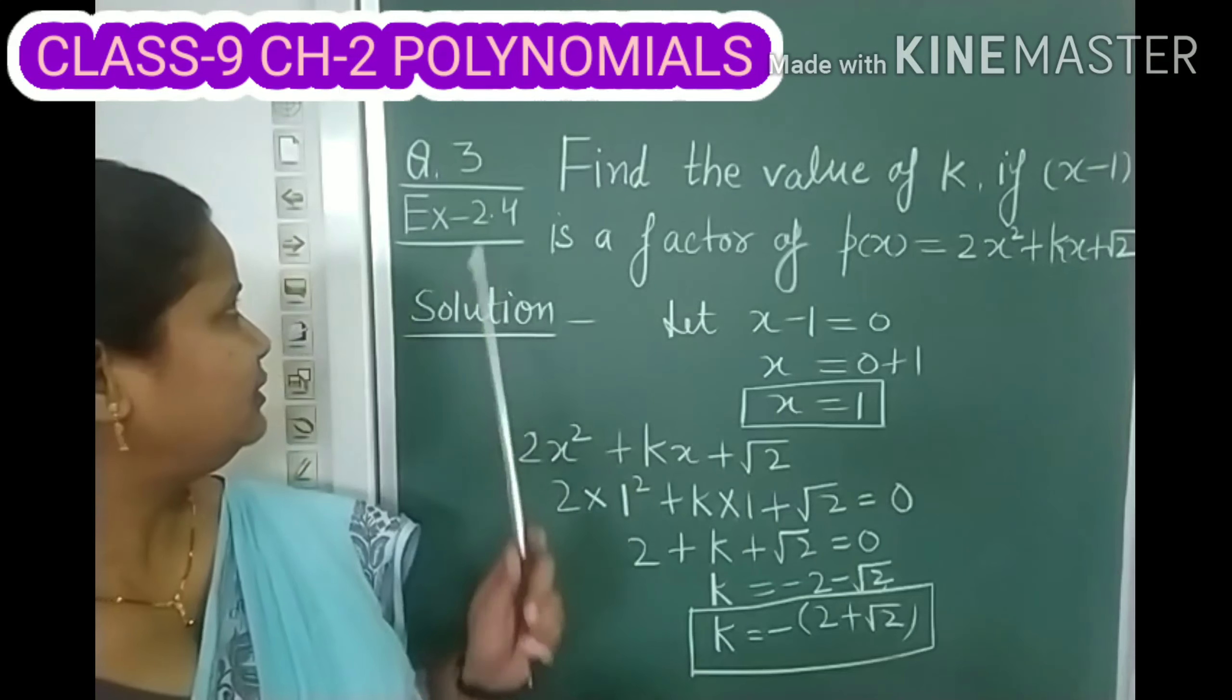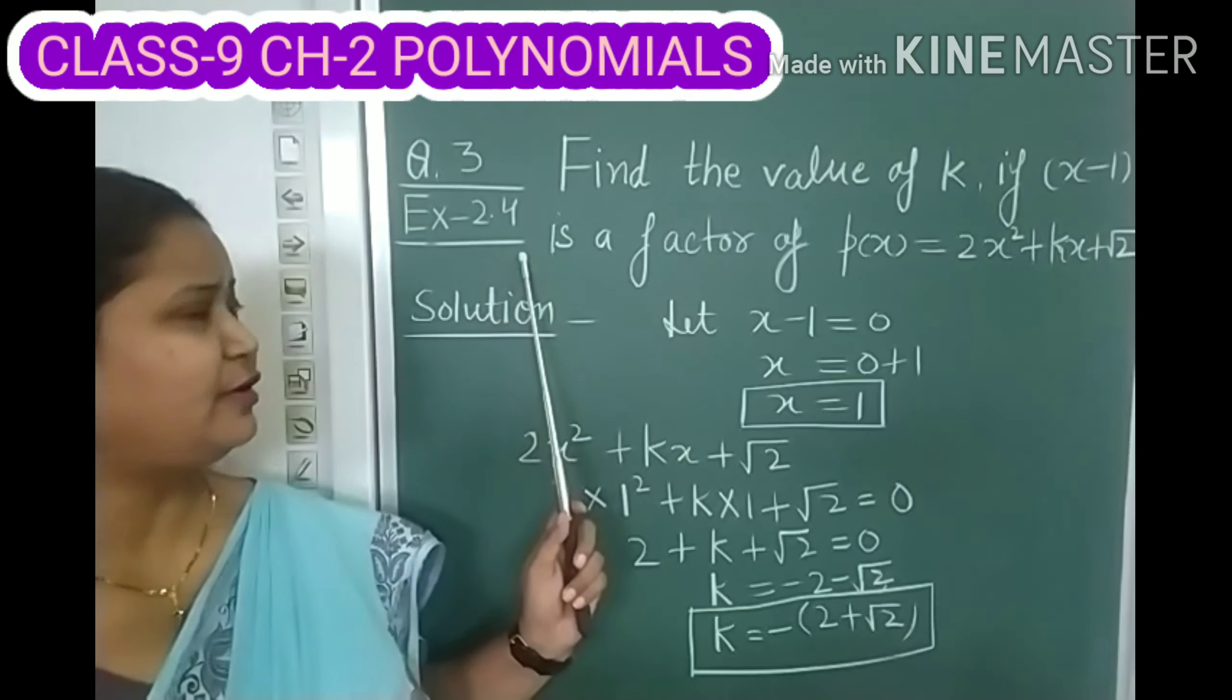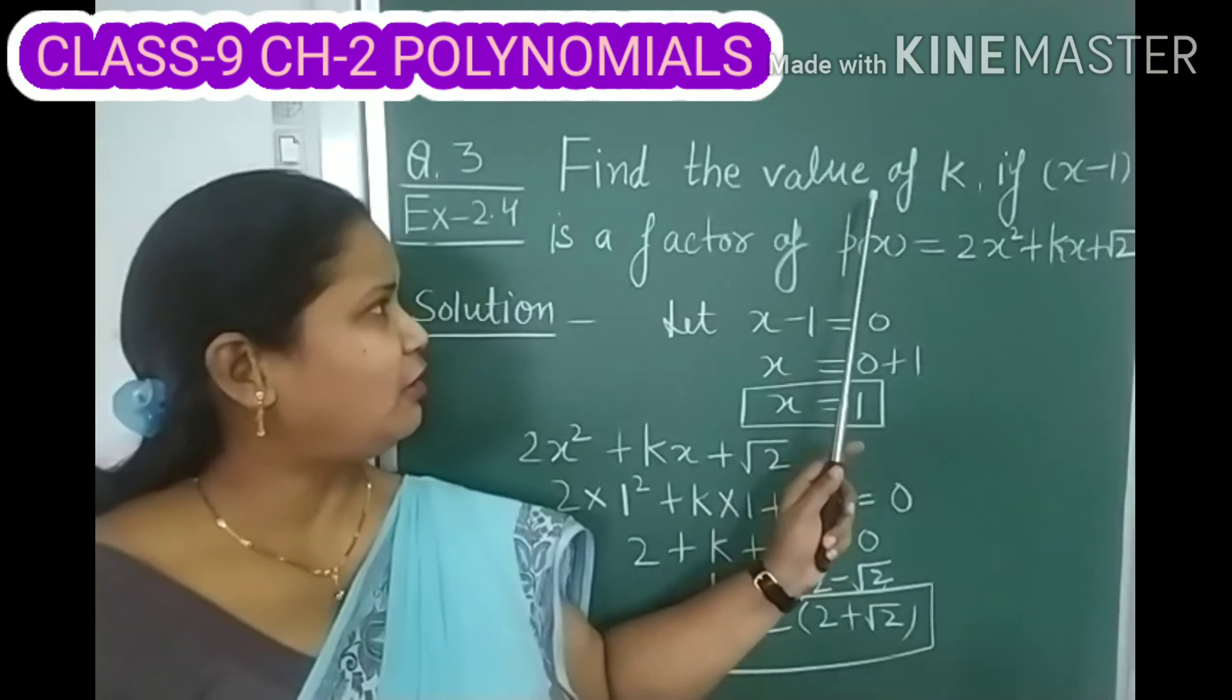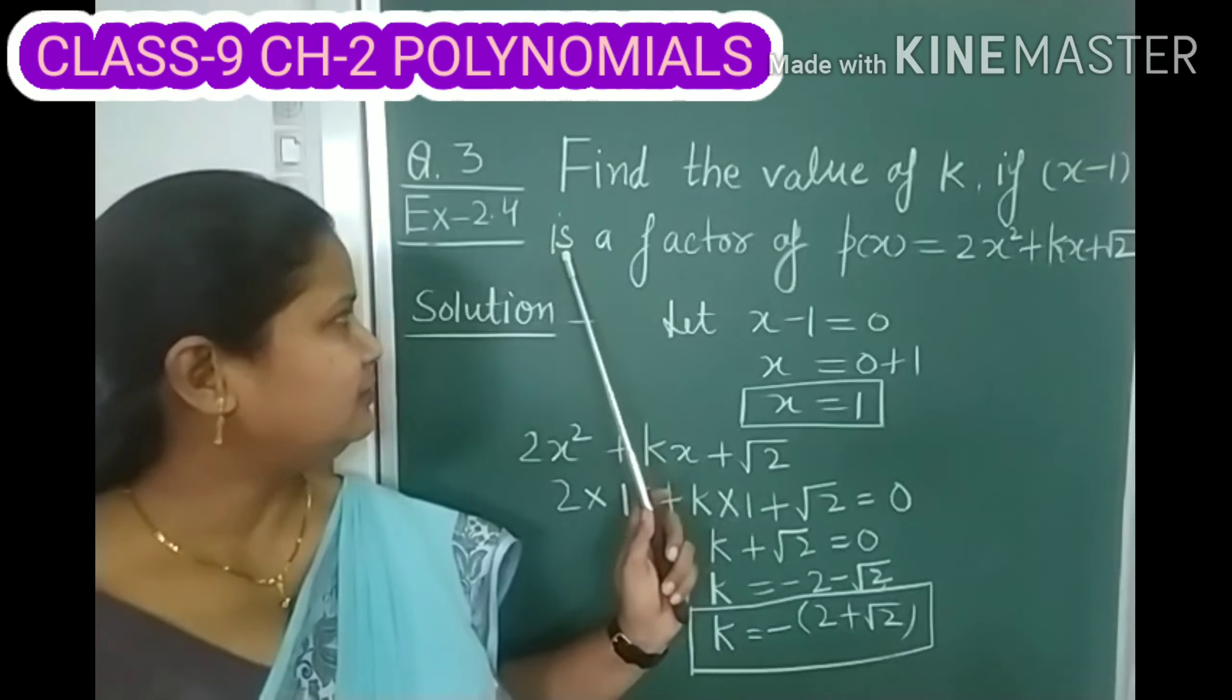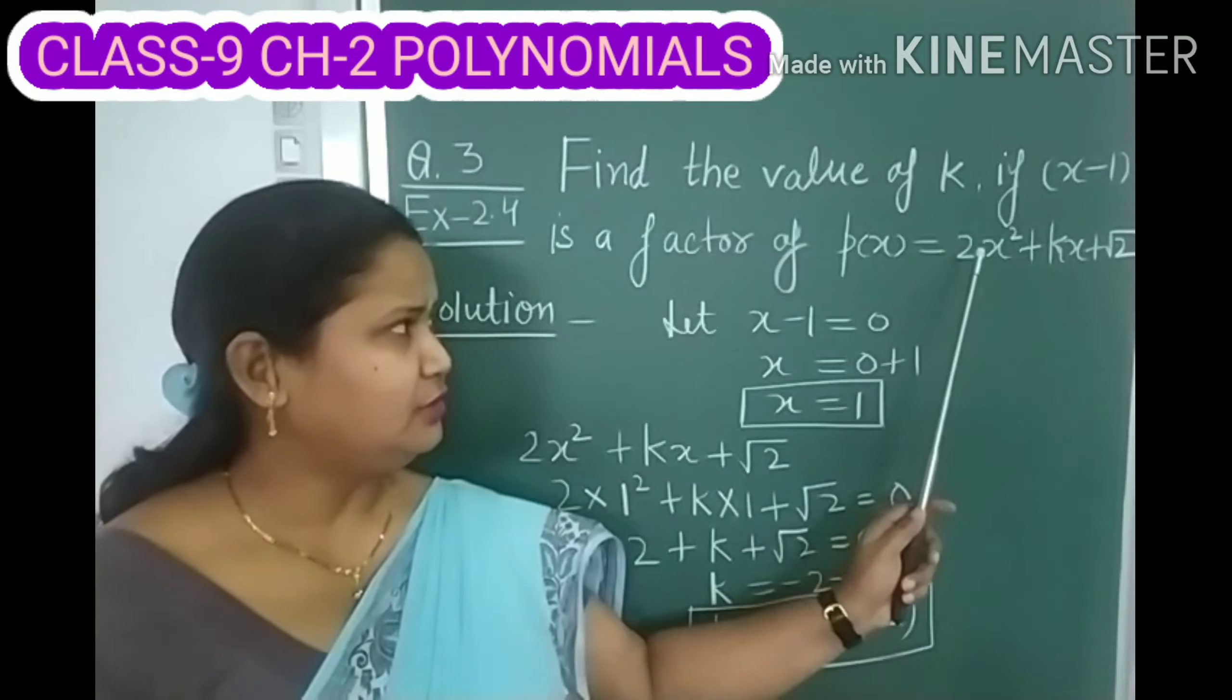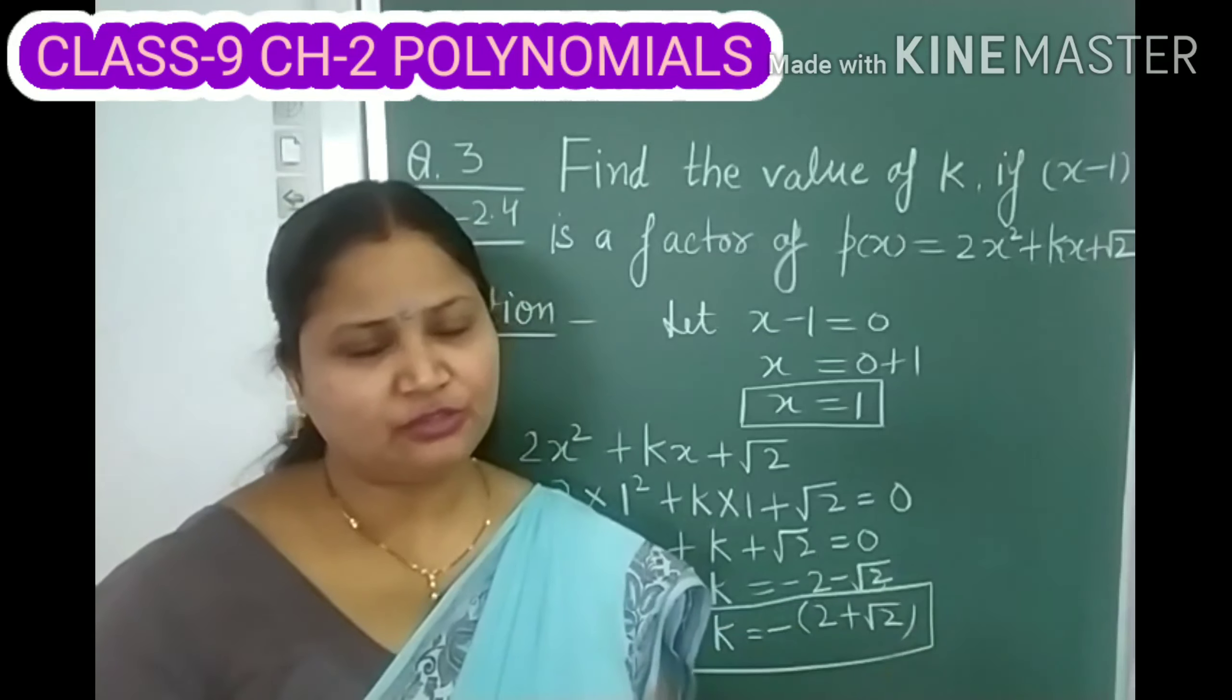This is question number 3 from your NCERT book of exercise 2.4. The question is, find the value of K if X minus 1 is a factor of f(x) equals to 2X square plus KX plus root 2.